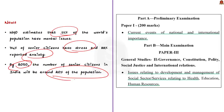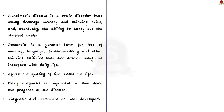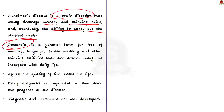Alzheimer's disease is a brain disorder that slowly destroys memory and thinking skills; eventually the patient loses the ability to carry out even the simplest tasks. It is a cruel disease usually found in elderly patients. Dementia is a general term for a collection of symptoms — loss of memory, language, problem-solving, and thinking abilities — generally found in Alzheimer patients in later stages.